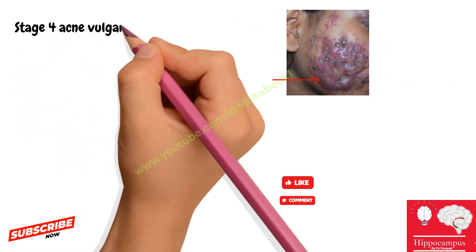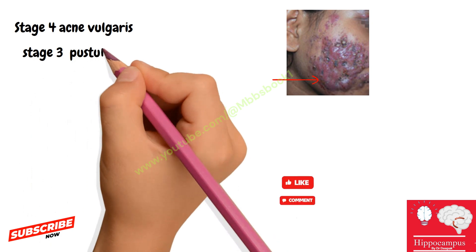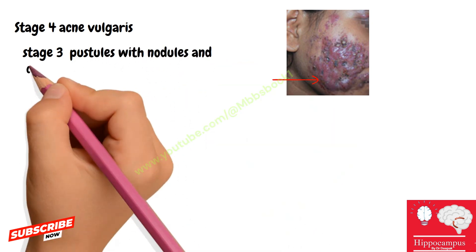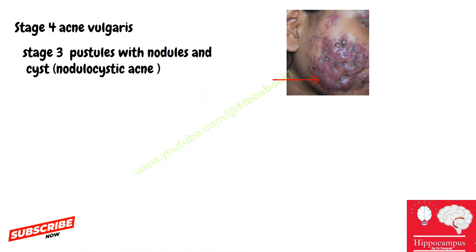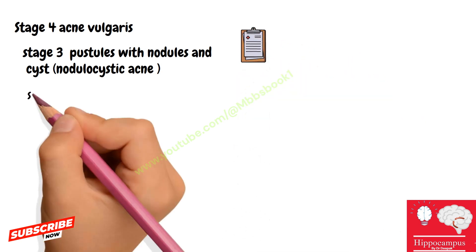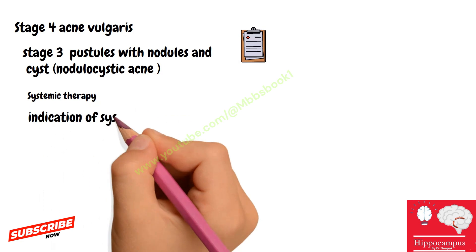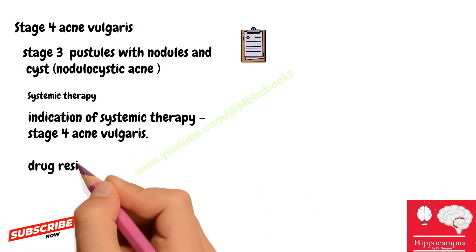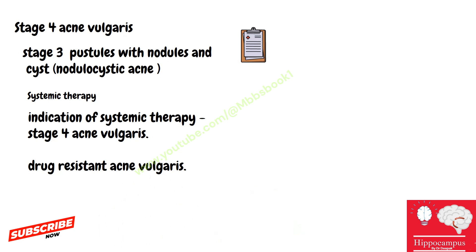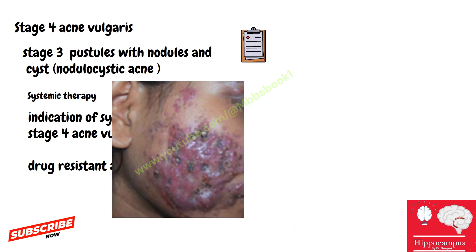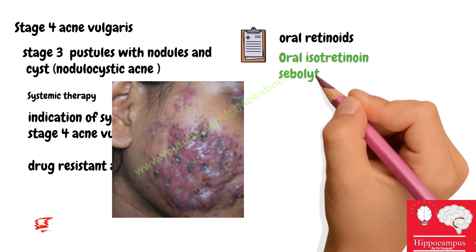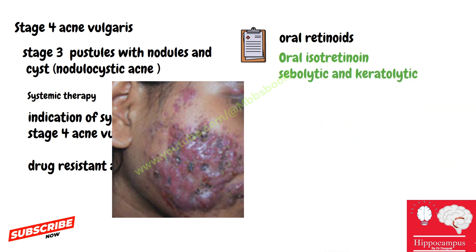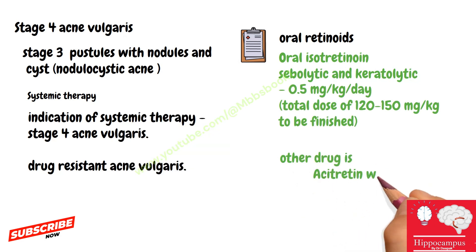Stage four features stage three pustules plus nodules and cysts — called nodulocystic acne — with very large lesions. Treatment involves systemic therapy. The indication for systemic therapy is not only stage four but also drug-resistant acne vulgaris. The drug used is oral retinoids — most commonly isotretinoin, which is a strong sebolytic and keratolytic. Acitretin can also be used and is mainly keratolytic.